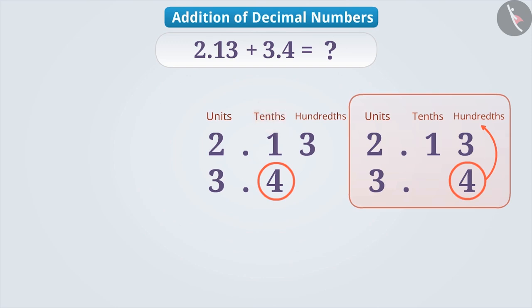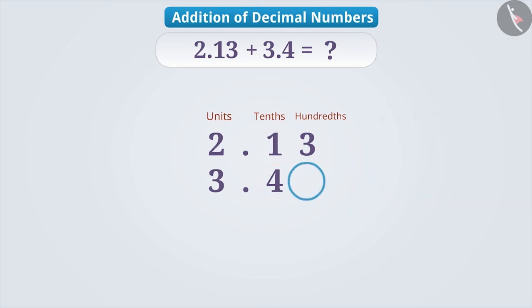Now there is no number in the hundredths place. So, we write 0 here. Writing 0 makes no change in the value of the number, but by doing so, the number of digits after the decimal points becomes equal. This helps in performing the addition operation.